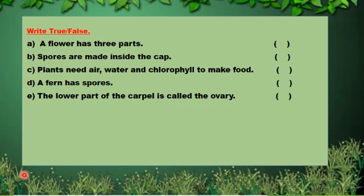Now mark here. A flower has three parts — it is false, you can cross it or write 'false.' Spores are made inside the cap — it is true. Plants need air, water and chlorophyll to make food — true. The lower part of the carpel is called the ovary — it is also true.